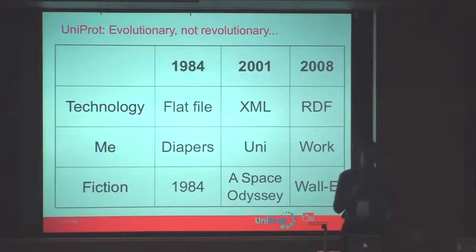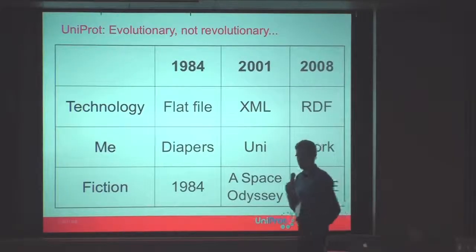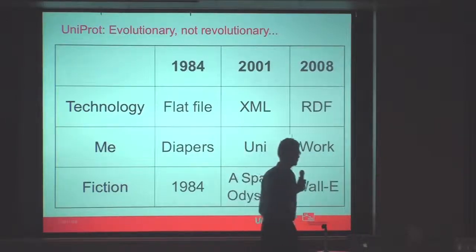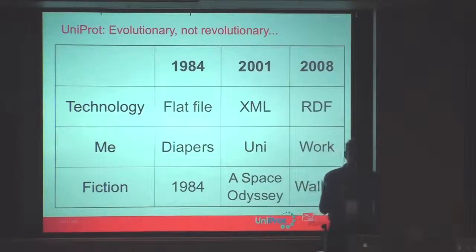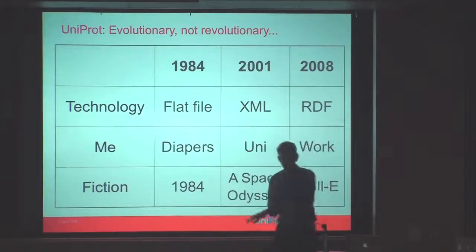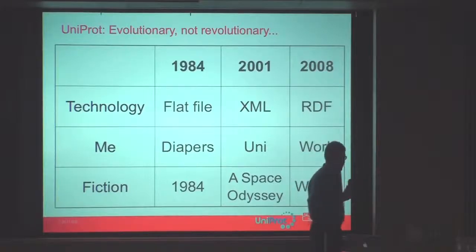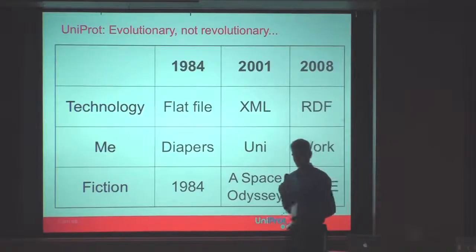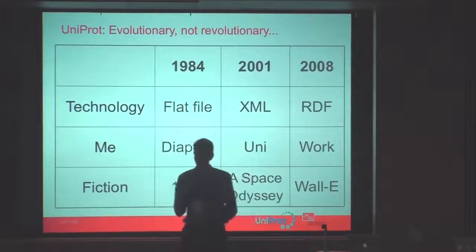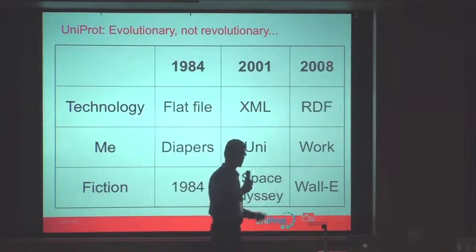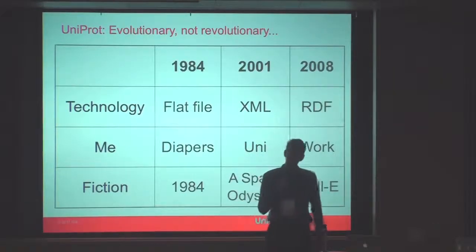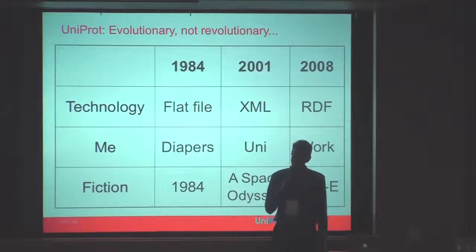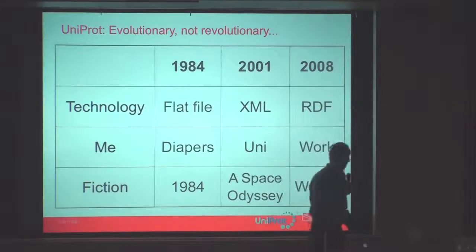UniProt data in its previous forms at SwissProt has been around for a long time. You can see that it started in 1984 with flat files. And I don't know if people read the book 1984, where you have the concept of thoughtspeak — this is also true in flat file formats in biological databases. You'd just put a number in square brackets, and everybody would know that this is a public identifier, not an assembled accession number.